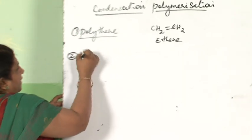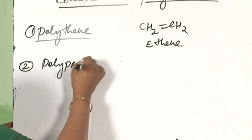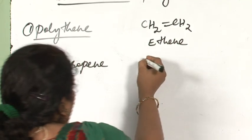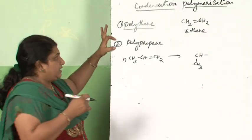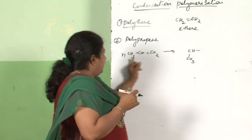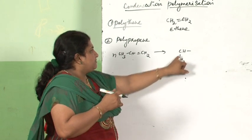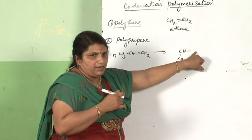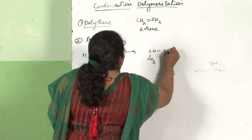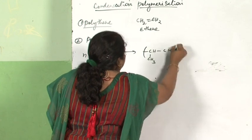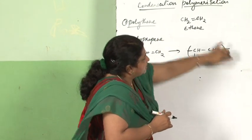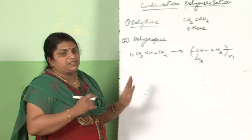The second polymer to study is polypropene. In this case, the monomer is propene. I have written CH3 as a branch because this two-carbon atoms of the double bond must combine with other carbon atoms. The structure is CH3-CH=CH2, and when N molecules polymerize, the carbon atoms of each monomer combine end to end to form the polymer.